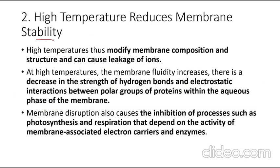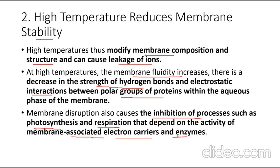High temperature reduces membrane stability. When temperature is high, membrane composition and structure are modified, causing leakage of ions from the membrane. The fluidity of the membrane increases, and there is a decrease in the strength of hydrogen bonds and electrostatic interactions between the polar groups of proteins. Membrane disruption inhibits processes such as photosynthesis and respiration, which depend on membrane-associated electron carriers and enzymes.